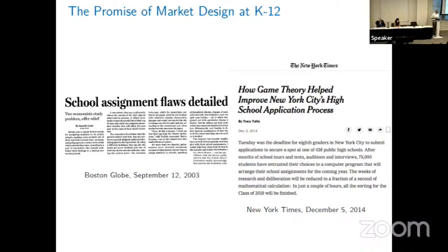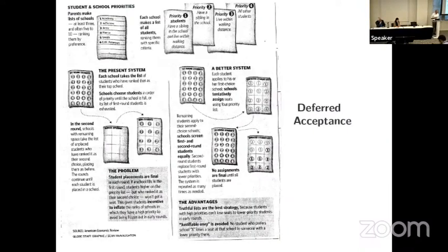A lot of the work in market design and education has focused on assignment algorithms. The Boston Globe article talks about the Boston mechanism and its issues with giving advice to participants, and alternatives like the deferred acceptance algorithm, which is now the most popular system used in many big city school districts. This has the advantage that truthful lists are the best strategy — it's a strategy-proof algorithm, and it eliminates justified envy.